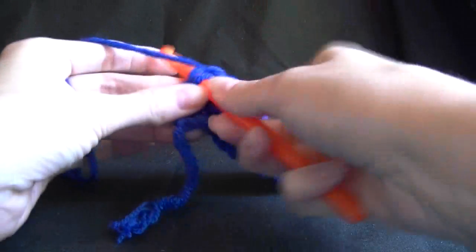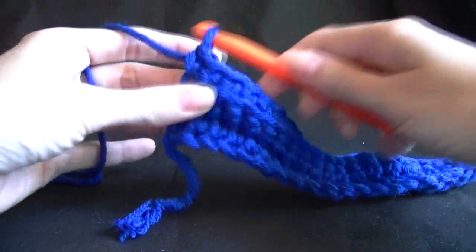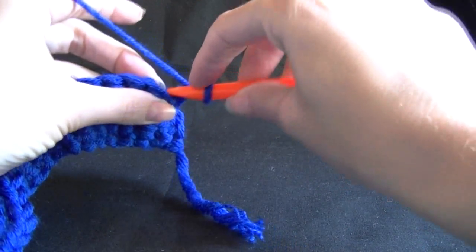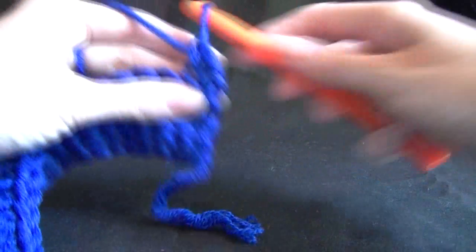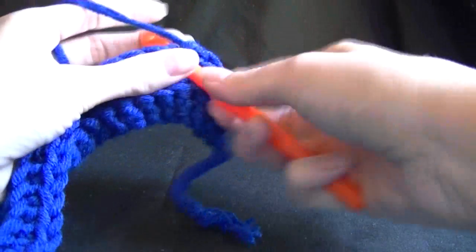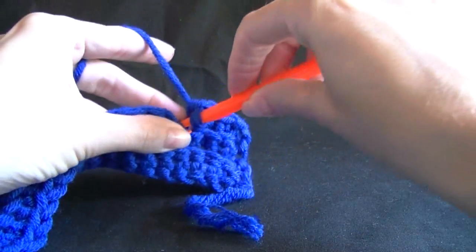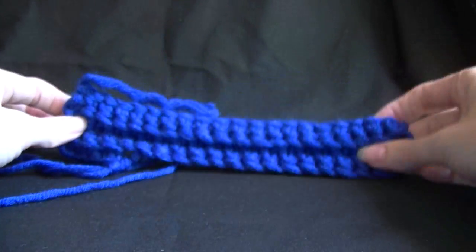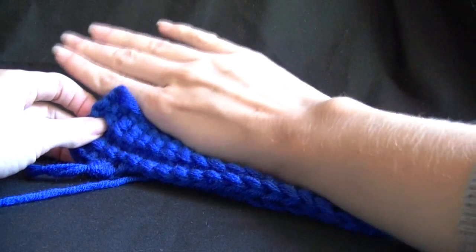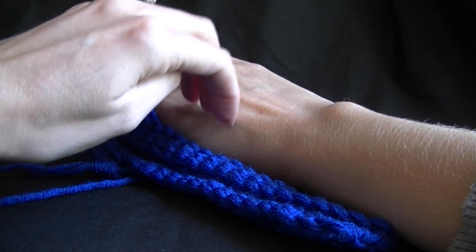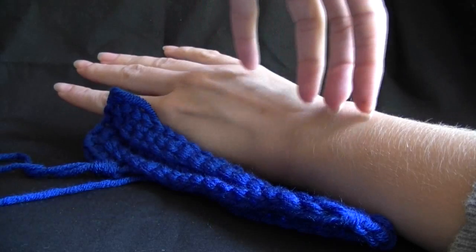And we want to keep making rows until we are able to wrap it around our arm. So we are actually making these sidewards. Instead of making them from our knuckles down to our wrist, we are making it sidewards. And I will just show you what I mean. So this is the length of our glove. And it is going to start at our knuckles and come down our wrist. So we are making it to go around this way. The whole thing is going to go around that way.